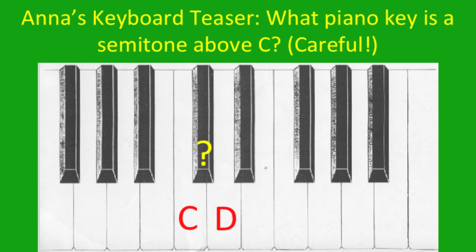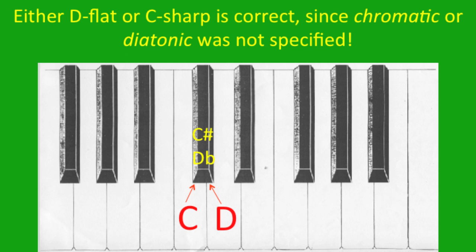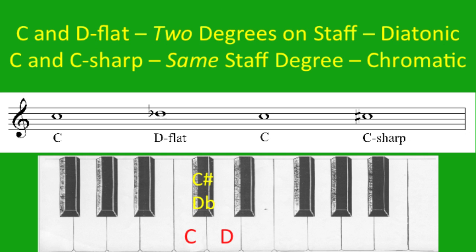Here's Anna's keyboard harmony teaser. Question: What piano key is a semitone above C? It's a tricky question — you could say either D-flat or C-sharp, because the question does not specify a chromatic or diatonic semitone. Though D-flat and C-sharp are the same key on the piano, they function differently in actual music. The interval C to D-flat is diatonic because it encompasses two consecutive degrees on the musical staff, whereas C to C-sharp is chromatic — C and C-sharp are both written on the same degree, the fourth space of the staff.